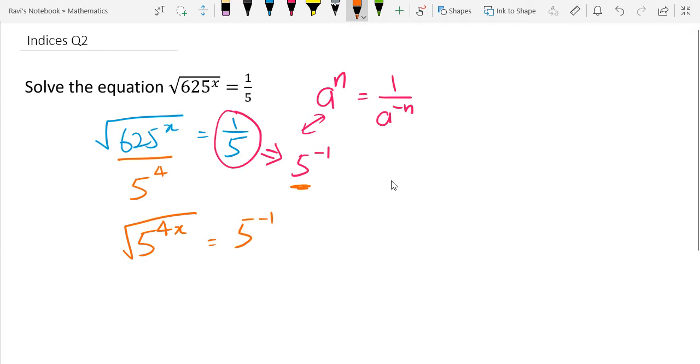And we know that anything square root is equivalent to saying that it is to the power of half. Okay, so that indices rule says that a square root is a to the power of half.